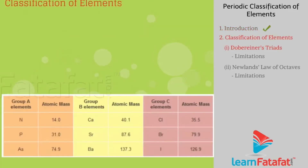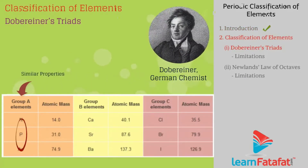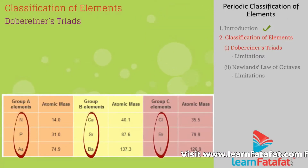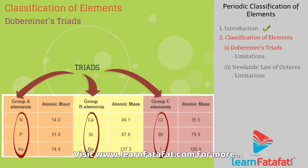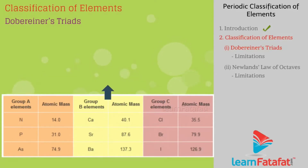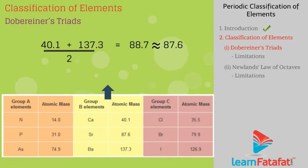Early attempts at the classification of elements: Dobereiner's Triads. Dobereiner, a German scientist, grouped elements based on similarity in properties. He found that each group contains three elements, so he called these groups as triads.